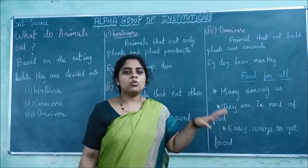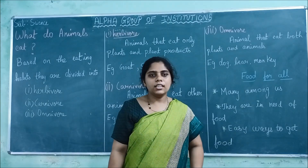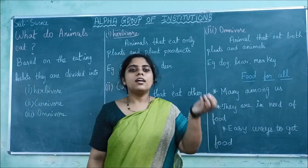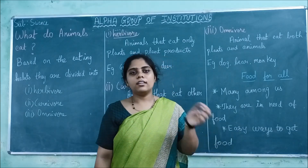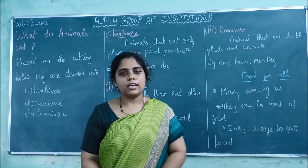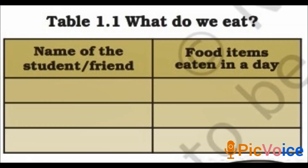I hope you learned something in this lesson. Go through the lesson and if you have any doubts, clear them. Do your activities correctly. Thank you, children. This is an activity for you: ask your friends about the items they eat during a day, and see if you can get information from friends staying in different states of India. List out the types of food they eat in a table with the student's name and the food they eat every day.